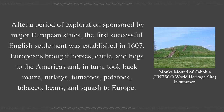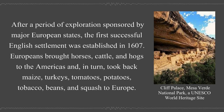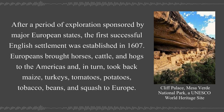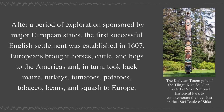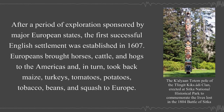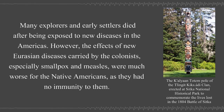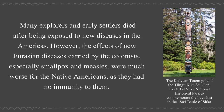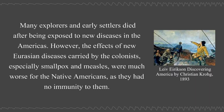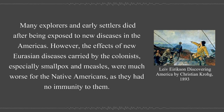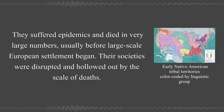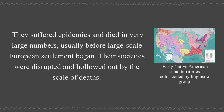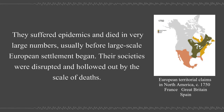After a period of exploration sponsored by major European states, the first successful English settlement was established in 1607. Europeans brought horses, cattle, and hogs to the Americas and in turn took back maize, turkeys, tomatoes, potatoes, tobacco, beans, and squash to Europe. Many explorers and early settlers died after being exposed to new diseases in the Americas. However, the effects of new Eurasian diseases carried by the colonists, especially smallpox and measles, were much worse for the Native Americans as they had no immunity to them. They suffered epidemics and died in very large numbers, usually before large-scale European settlement began, and their societies were disrupted and hollowed out by the scale of deaths.